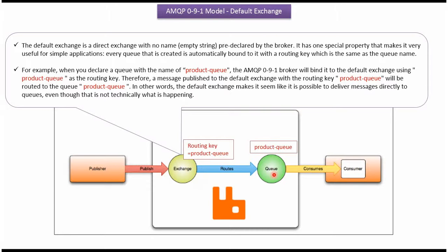In the case of default exchange, whenever a queue is created, it is automatically bound to the default exchange with a routing key which is the same as the queue name.